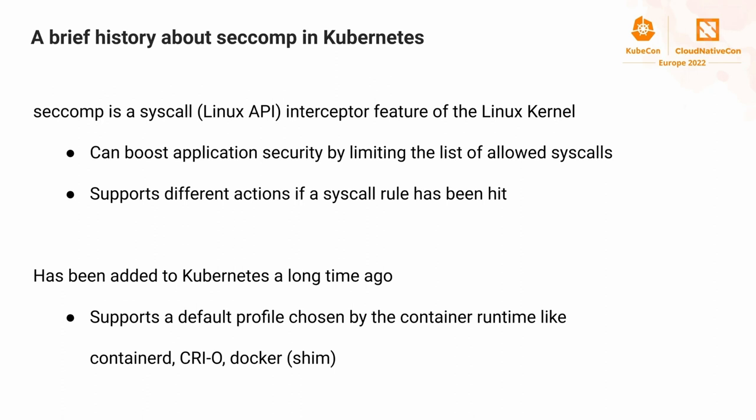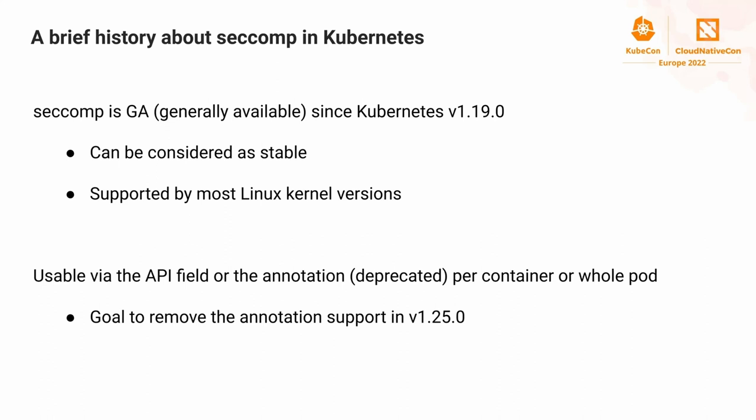Seccomp has been in Kubernetes for a long time, and we also have a default security profile defined by the container runtimes. Kubernetes requires such a profile to exist in every container runtime like containerd, CRI-O, and Docker. Seccomp went GA - generally available - since Kubernetes 1.19, so we can consider this feature stable since quite a few releases.